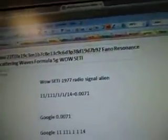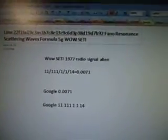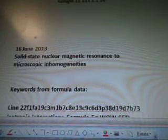Line 22, 7B92, Fano Resonance, Scattering Waves Formula, Alien Radial Signal. This is the Fano Resonance Asymmetric Line Shape Particle Scattering Formula Methods and PDF Results, found in the Law of Data, line 22.